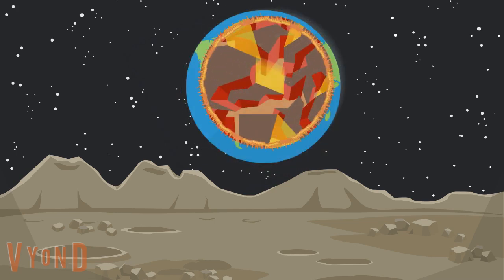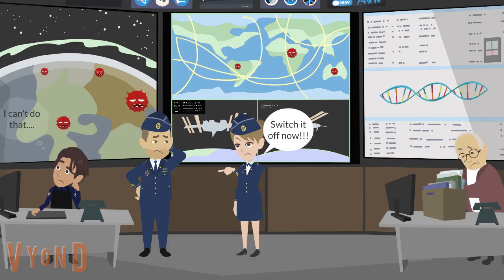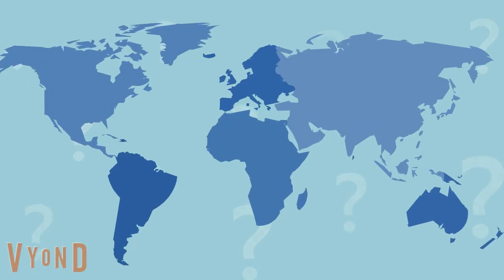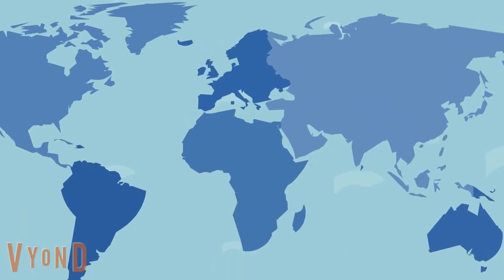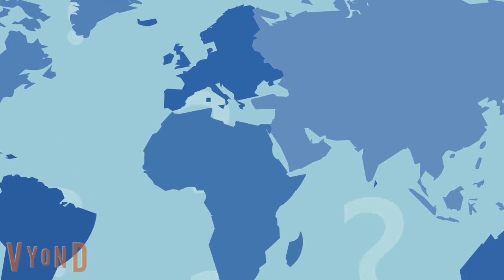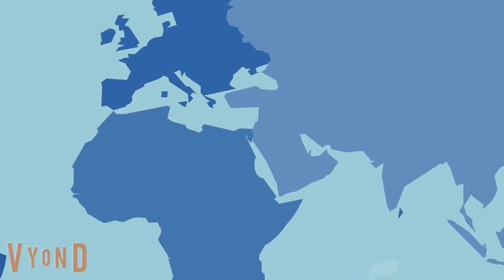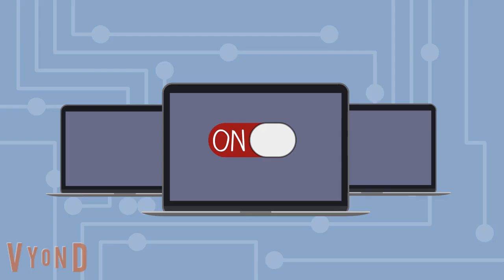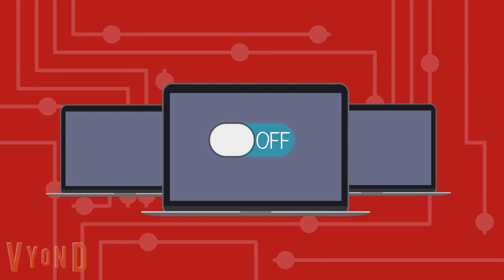The internet is effectively borderless, so switching off the internet is not really an option for almost all countries, although many believe that some governments do have the ability, but legislation in many countries will stop most governments from owning a kill switch for the internet.